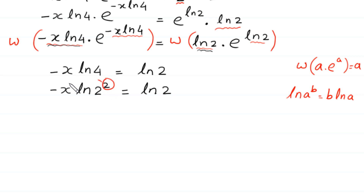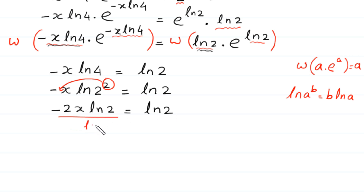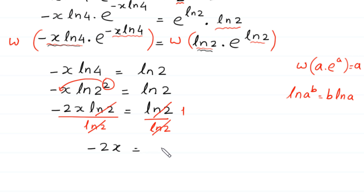So we multiply this 2 by negative x: negative 2x times ln of 2 is equal to ln of 2. Dividing both sides by ln of 2, this ln of 2 cancels on both sides leaving negative 2x is equal to 1. Dividing both sides by negative 2, we get x is equal to negative 1 over 2. This is the final answer.